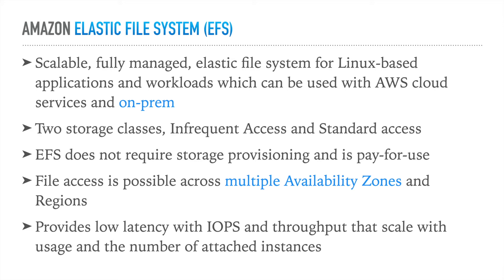EFS has two storage classes: infrequent access and standard access. EFS does not require storage provisioning — it is pay-as-you-use. With EBS you specify a size like 1TB or 2TB upfront, but EFS doesn't require that. File access is possible across multiple availability zones and even regions. EFS provides low latency with IOPS and throughput that scale with usage and the number of attached instances.